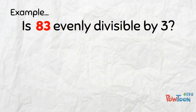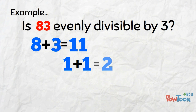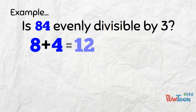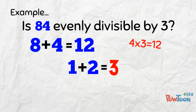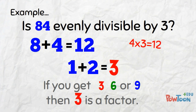83 won't work either, because 8 plus 3 is 11, which is not divisible by 3, and using the adding method, 1 plus 1 is 2. But 84 will work! 8 plus 4 is 12 — we know 12 is divisible by 3, four 3s are 12, and using the adding method, 1 plus 2 is 3. Remember, if the answer is 3, 6, or 9, the number IS divisible by 3 — it HAS got 3 as a factor!